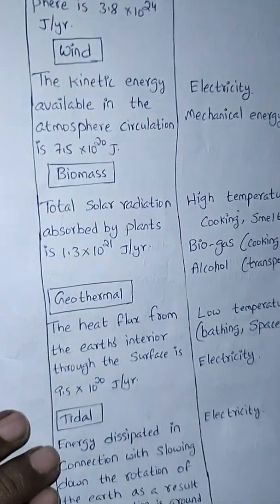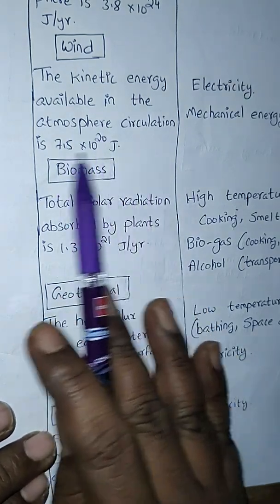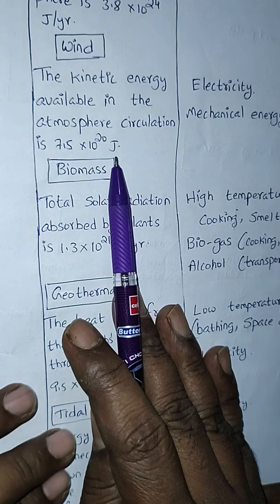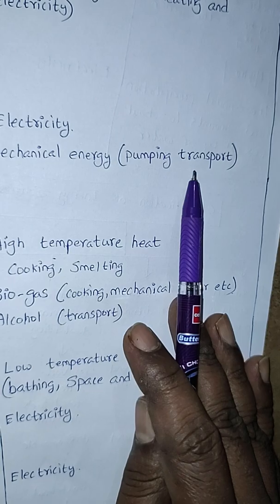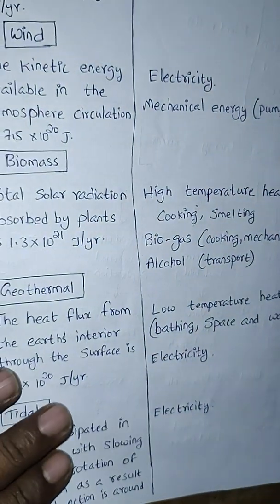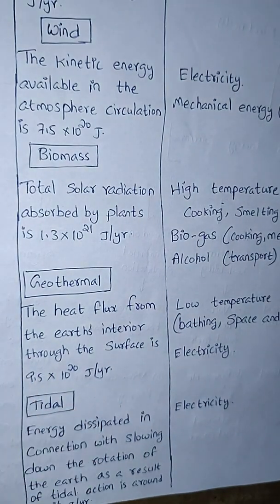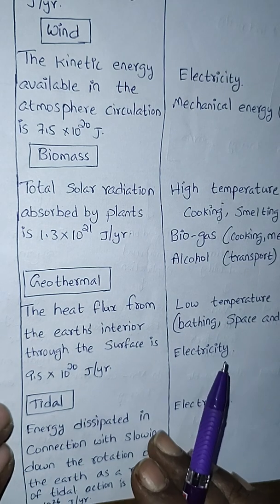Next resource is wind. The kinetic energy available in the atmosphere circulation is 7.5 × 10²⁰ J. The applications include electricity and mechanical energy for pumping and transport. With wind, once the wind blades rotate, they are connected to a turbine, and once the turbine rotates we get electricity.